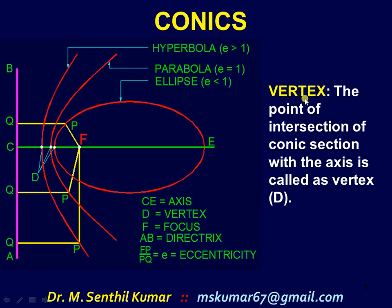The Vertex: The point of intersection of the conic section with the axis is called the vertex. The vertex D is here for the ellipse. In the case of parabola, this is the point D. In the case of hyperbola, this is point D.